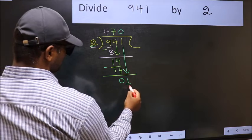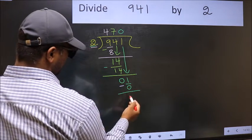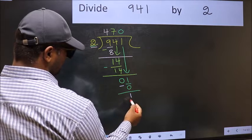So 2 into 0, 0. Now you should subtract. 1 minus 0, 1.